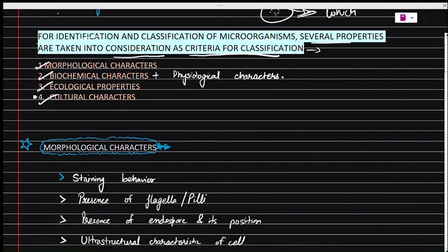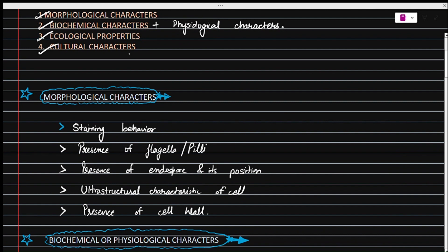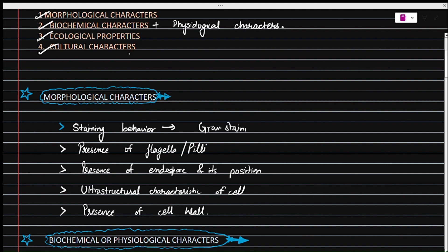First, we will talk about morphological characters. To obtain information regarding morphological characters, we use staining. There are various staining methods like Gram staining, Neisser-Ziehl-Neelsen staining (which is acid-fast staining), and some other staining methods. We also detect the presence or absence of flagella and pili, or some other external characters found in microorganisms.